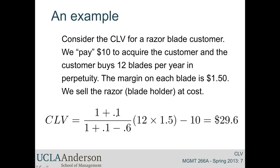We must discount this stream for two things: the opportunity cost of money and the riskiness of the stream, so little i is set to 0.10, as well as the retention probability, set here to 60% for illustration. The present value discounting factor takes into account both the risk-adjusted interest rate and the retention probability. The revenue stream per year is 12 times $1.50. Assuming an acquisition cost of $10 and that the razor is sold initially with zero margin, a customer is worth to Gillette/P&G about $30, because this revenue stream is extremely valuable.